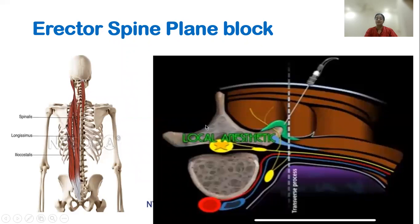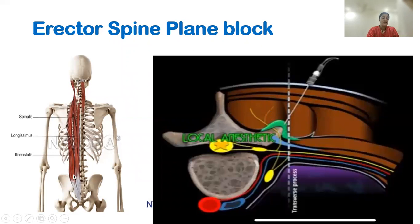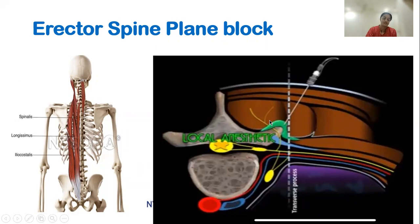The erector spinae plane block is more superficial than the paravertebral space — it is above the transverse process and beneath the erector spinae muscle. It runs along the thoracolumbar spine and is a fascial plane block. It is not a direct nerve block but runs along the fascia beneath the erector spinae muscle, above the transverse process, and close to the costal transverse ligament and origin of the dorsal rami.